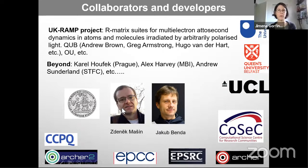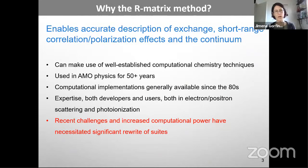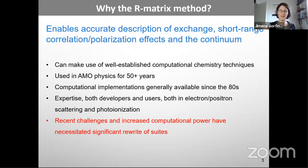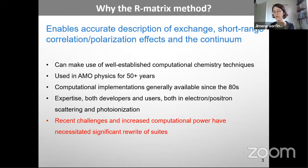So why the R-matrix method? The R-matrix method enables the separation of the two difficult parts of the problem. On one hand, you describe the short-range effects — the exchange and correlation — and on the other hand, the continuum. That makes it very appropriate for atomic and molecular processes involving a particle in the continuum. For exchange and correlation, you can use well-established computational chemistry techniques.